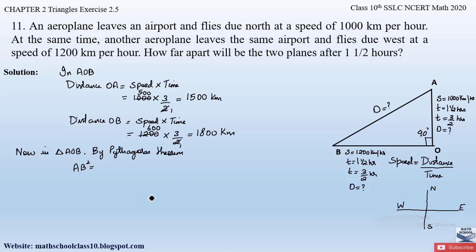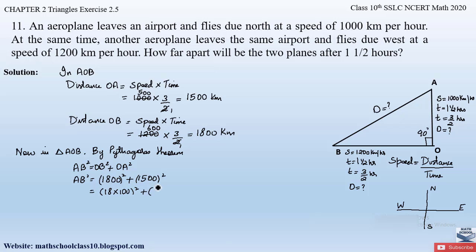So AB² = OB² + OA². The value of OB is 1800 kilometers and OA is 1500 kilometers. So AB² = 1800² + 1500². Now 1800 can be written as 18 × 100, so 1800² = 18² × 100². Similarly 1500² = 15² × 100². We write it this way to make simplification easier.